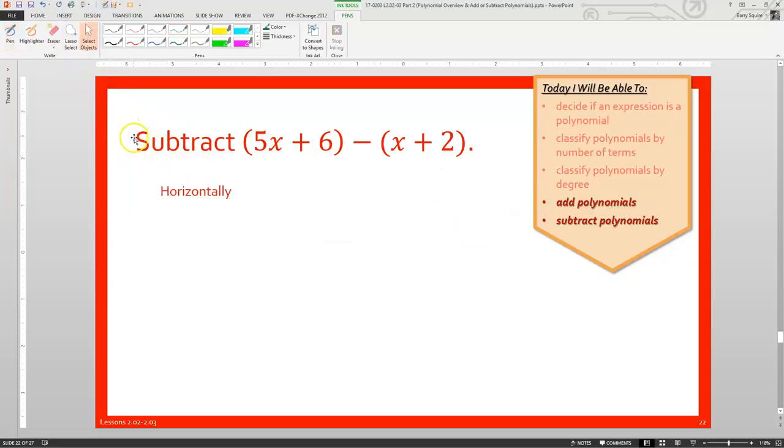If we were to do this horizontally, I think this might make a little bit more sense if we think about this minus sign as really being a multiplying negative 1 in there. So then what we're going to do is we'll distribute that negative 1, like that. So we kind of end up with 5x plus 6. Then negative 1 times x becomes negative x. Negative 1 times 2 becomes negative 2. Now we just combine like terms, like we've done before. Group them together, maybe.